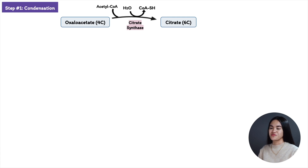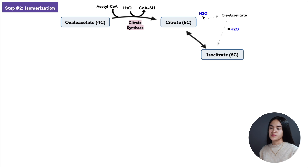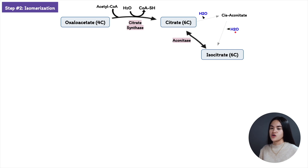Moving to step two: citrate is transformed into isocitrate via the formation of cis-aconitase, catalyzed by aconitase. This reaction is reversible. Citrate is first converted to cis-aconitase by a dehydration reaction, and then converted to isocitrate by a hydration reaction — water is removed and then added back — moving the hydroxyl group from carbon two to carbon three.